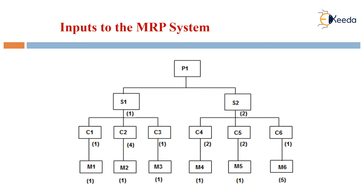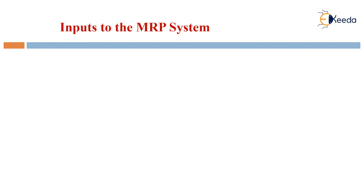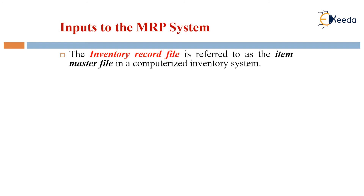In the production system, we have P1, which gives rise to aggregate planning of S1 and S2. Under S1, three departments C1, C2, and C3 work to produce final products M1, M2, and M3. Similarly, under S2, departments C4, C5, and C6 produce M4, M5, and M6. Based on this production planning, the final outputs are M1 through M6. The inventory record file is referred to as the item master file.